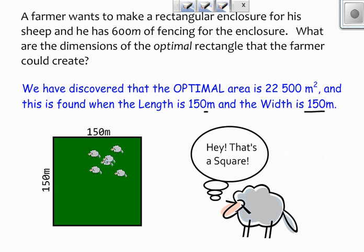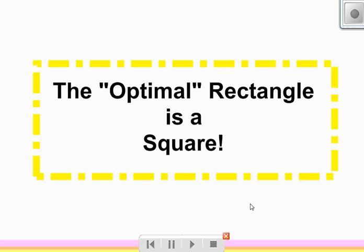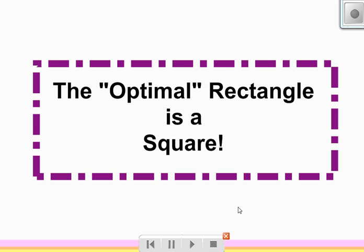A square is, in fact, the best answer. So when the sheep says, hey, that's a square, that's actually the whole point of this lesson: the optimal rectangle is a square. So if you're trying to find the best rectangle given a certain number of constraints, you want to make a square. Got it? I hope so.